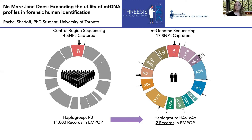What prevents us from identifying human remains? In some cases, it's a lack of nuclear DNA availability. When remains are highly decomposed or degraded, the recovery of nuclear DNA is inhibited, so we turn to mitochondrial DNA.